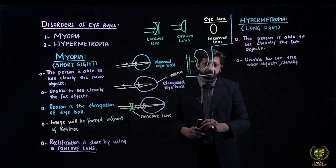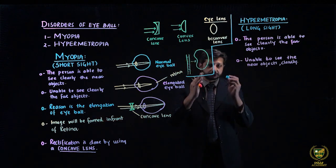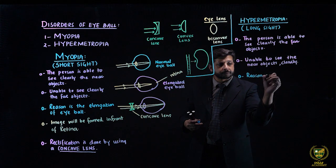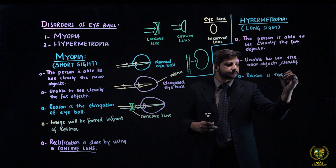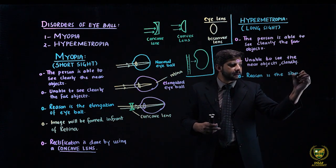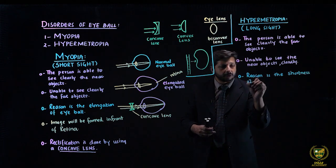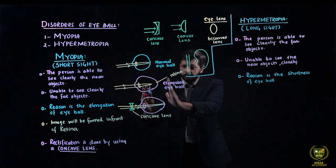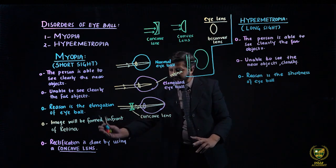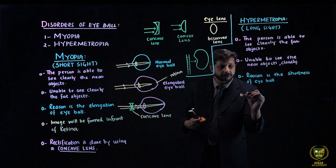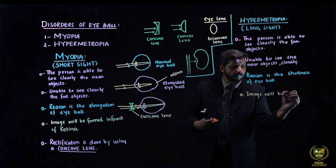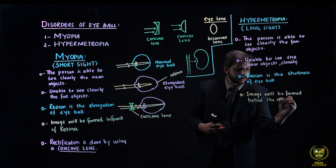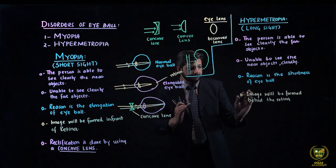The reason for myopia was elongation of the eyeball. جبکہ hypermetropia میں the reason is shortness of the eyeball — آنکھ چھوٹی ہو جاتی ہے۔ In myopia, the image will be formed in front of the retina. جبکہ hypermetropia میں اس کے opposite — the image will be formed behind the retina.